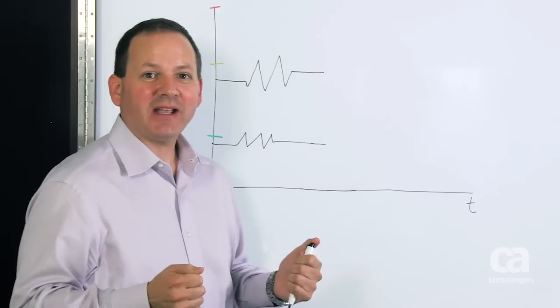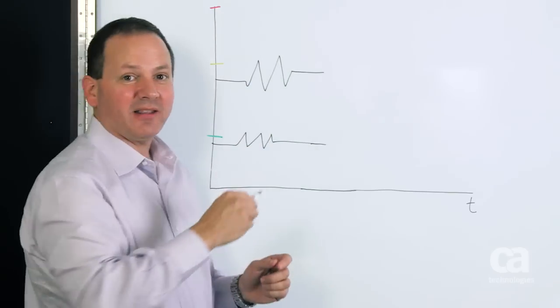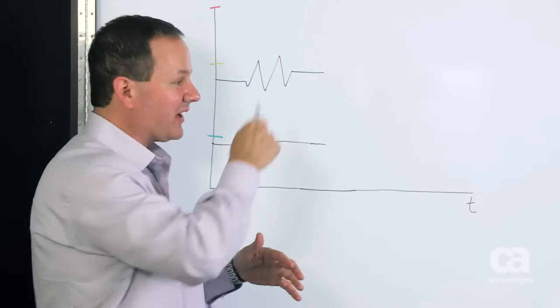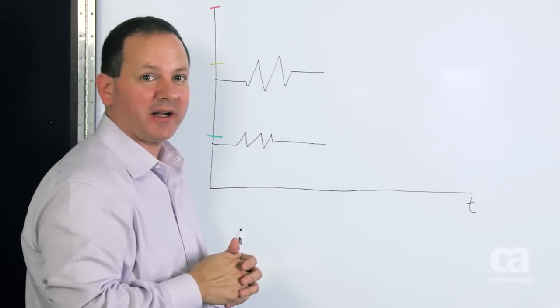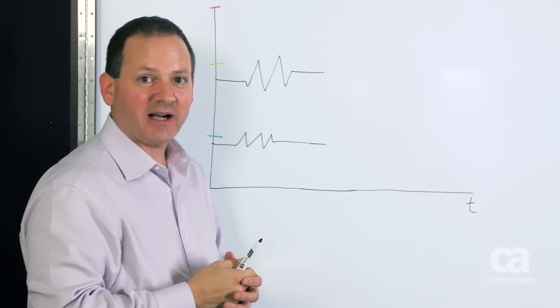You know, the current state of the market in analytics for APM is this typical green, yellow, red thing, right? Where you've got the thresholds and you've got single value metrics that you're plotting against those thresholds. And that's certainly a necessary and important feature. Everybody's got it.